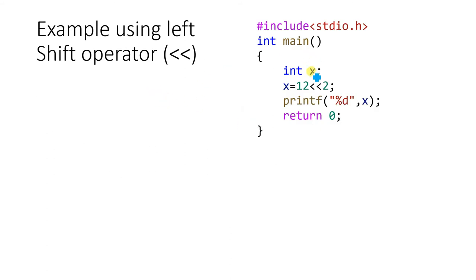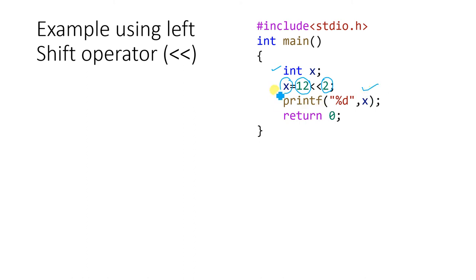Let us take a proper example to understand how this is executed. Here is a simple example with three lines. I have taken one variable x and assigned x = 12 left shift 2. That means 12 needs to be represented in binary, then we shift 2 bits, and whatever decimal value we get is stored in x. After that, we print the value of x.